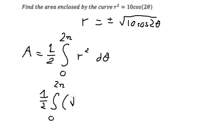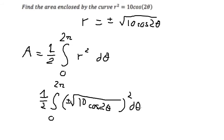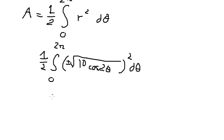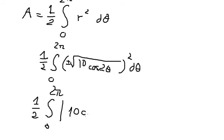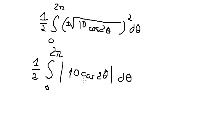We will have the square root of 10 cosine 2 theta, with positive and negative, raised to the power 2, d theta. In this situation you will get the absolute value of 10 multiplied by cosine 2 theta, d theta. Now we need to find the intersection.